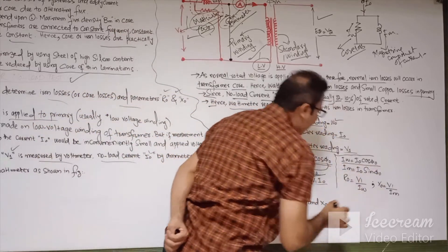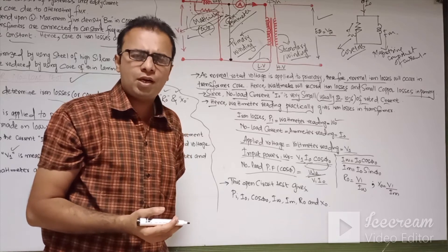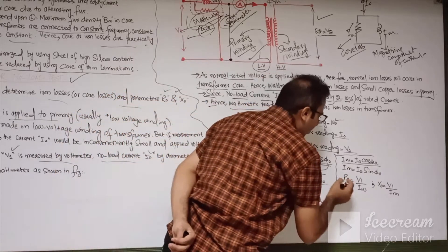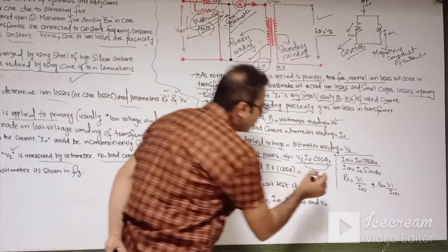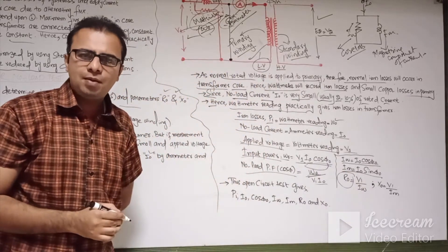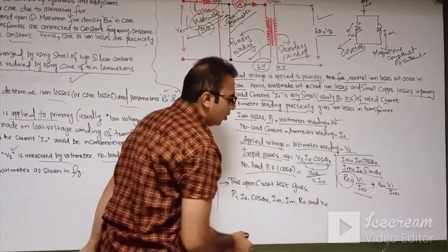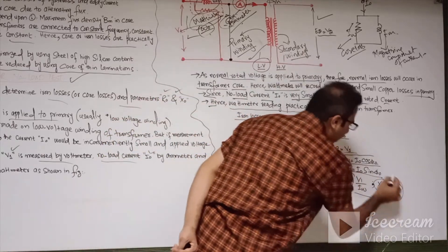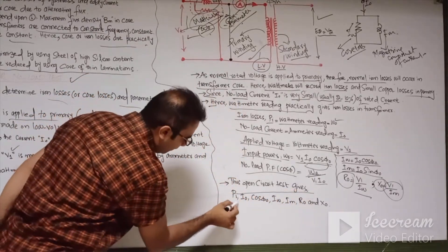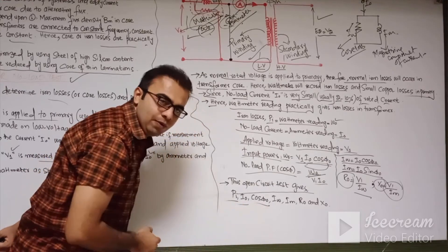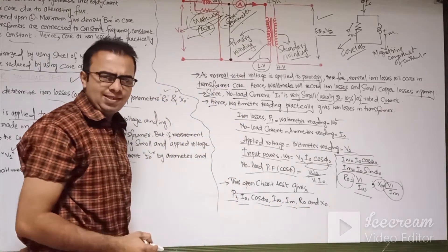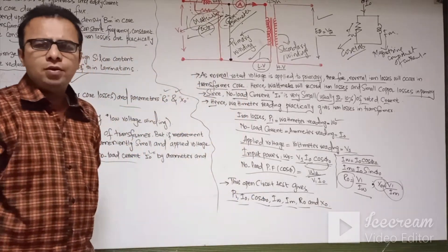As already discussed in the previous lecture, IW = I0 cosφ₀ is the working component, and IM = I0 sinφ₀ is the magnetizing component of the current. From these, you can easily find out R0, the resistance component, as R0 = V1 / IW, and the reactance component X0 = V1 / IM. So the open circuit test gives the no-load input power, no-load current, no-load power factor, the core loss component of current, the magnetizing component of current, and the parameters R0 and X0.